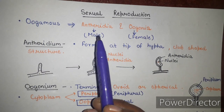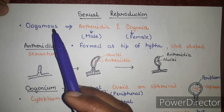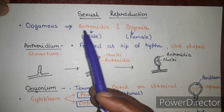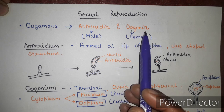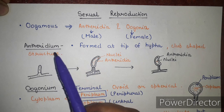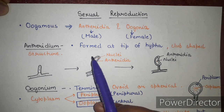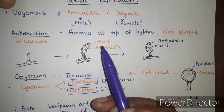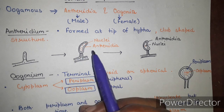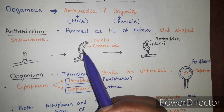Now we will discuss sexual reproduction in Pythium. Sexual reproduction in Pythium is oogamous — that's why it belongs to Oomycetes. It has anthridia, which are the male reproductive structures, and oogonia, which are the female reproductive structures. Anthridia are formed at the tip of the hyphae and are club-shaped structures with many nuclei in earlier stages.